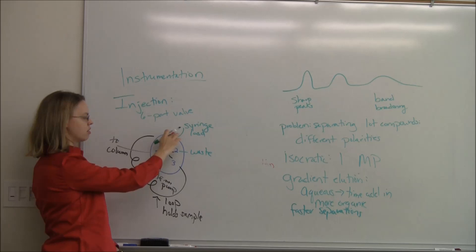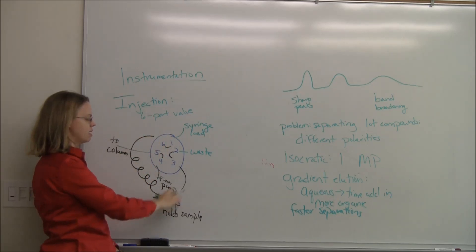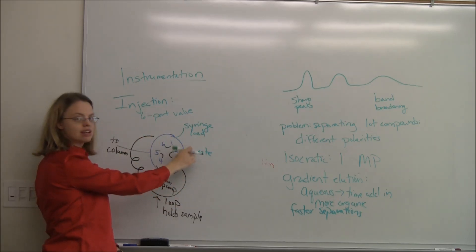I need one thing coming into the loop. That's from my syringe. So my syringe is going to go in and that's going to be able to load that loop. And then this is just a waste. So in the initial load stage, I'm going to load my stuff in my loop. If I put extra in, it's going to go to waste.